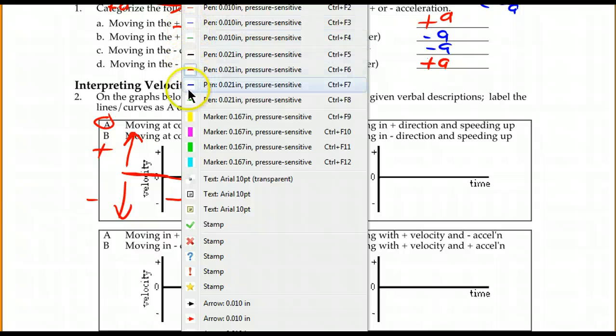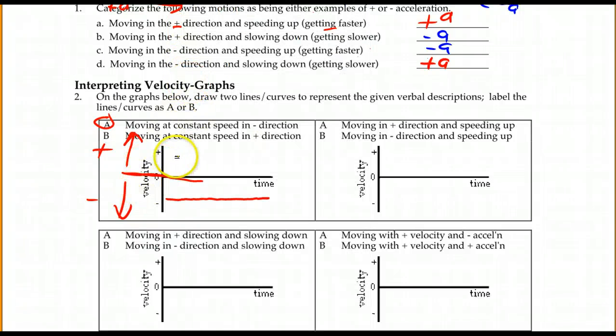If you look at B, the only difference in B is that we are moving in the positive direction with constant speed. So, I have to be above zero, but I have to be a constant or flat line. Acceleration is zero, but we are moving.